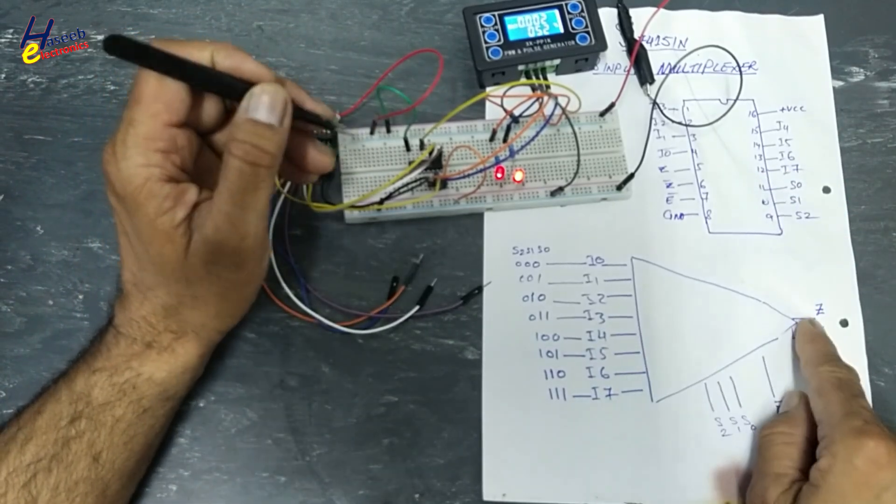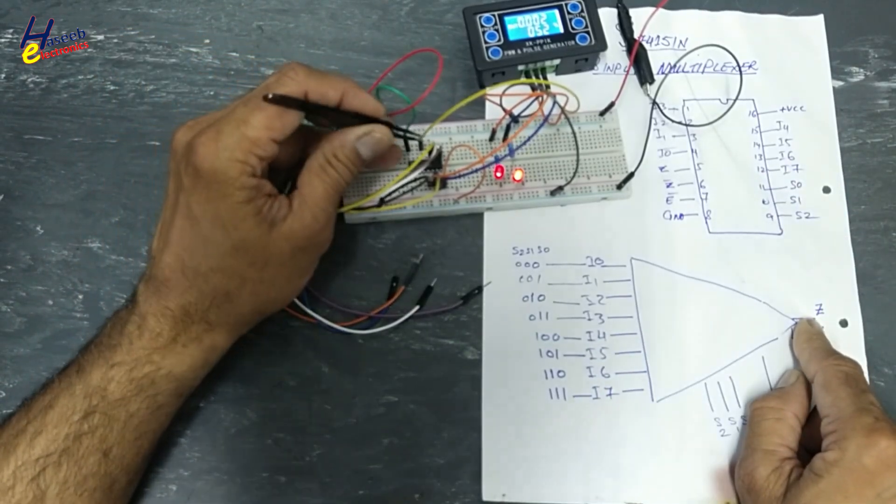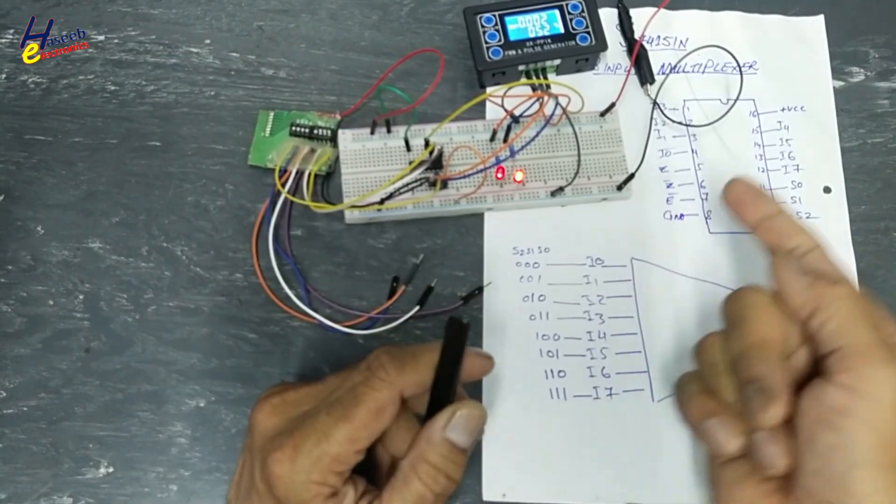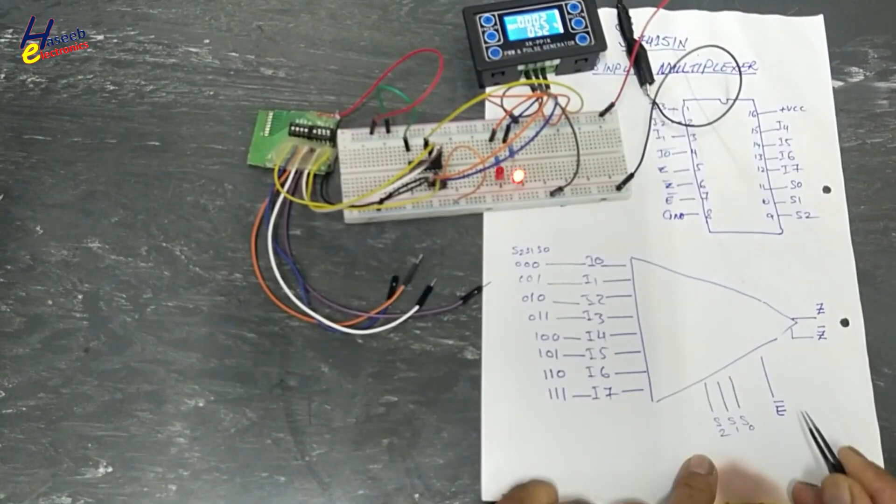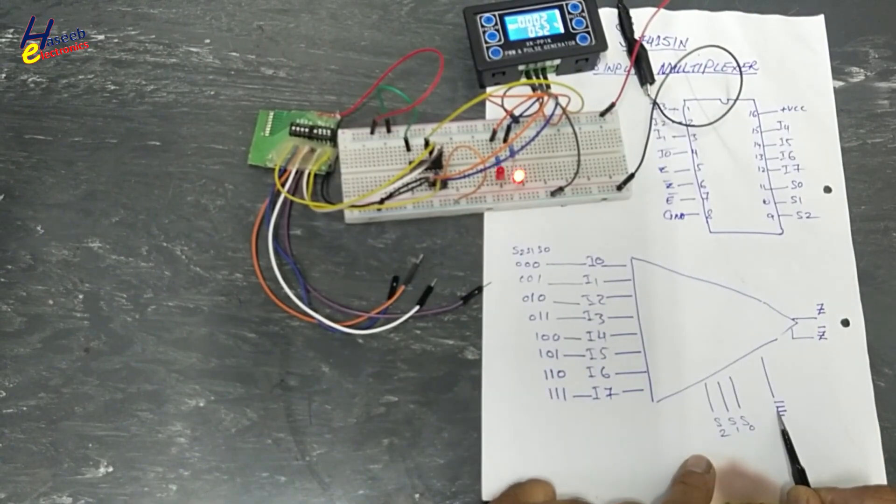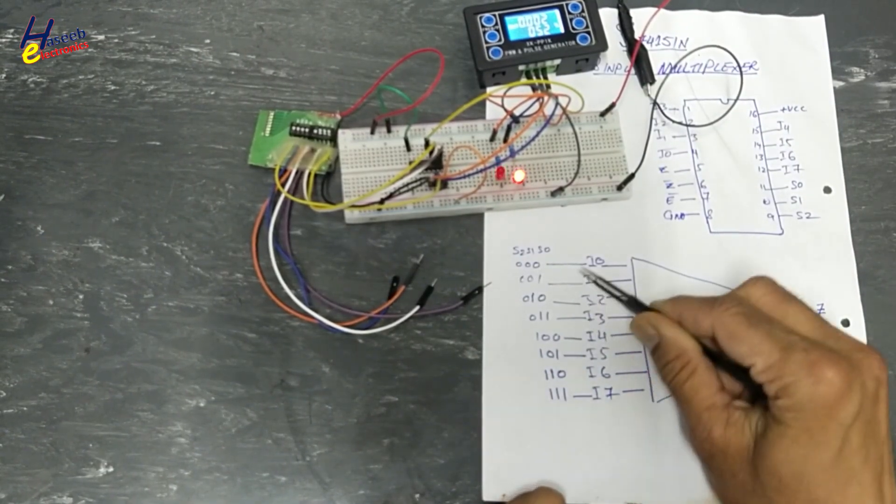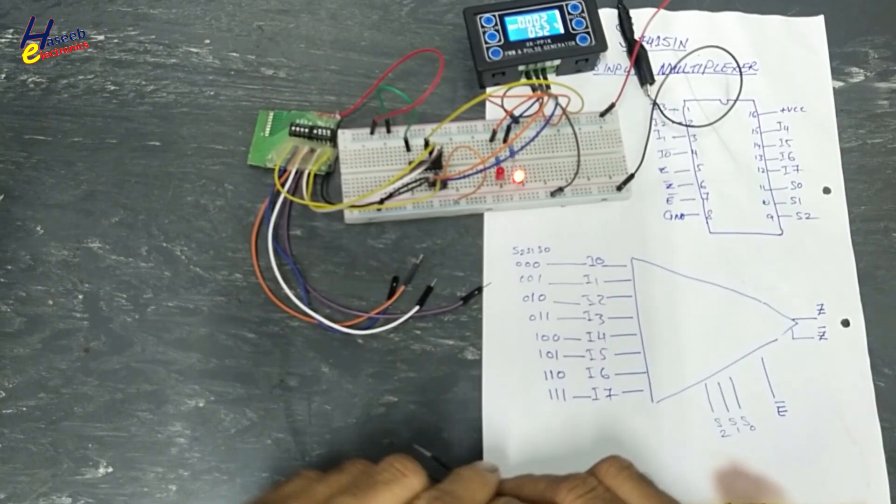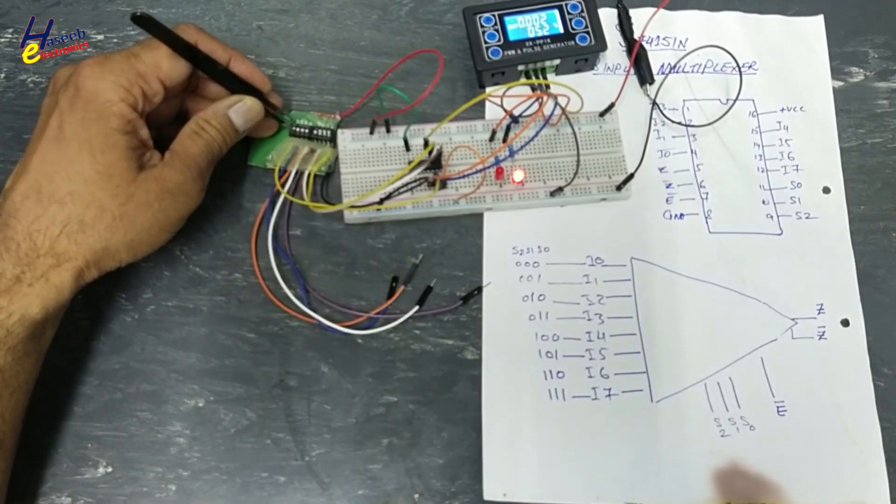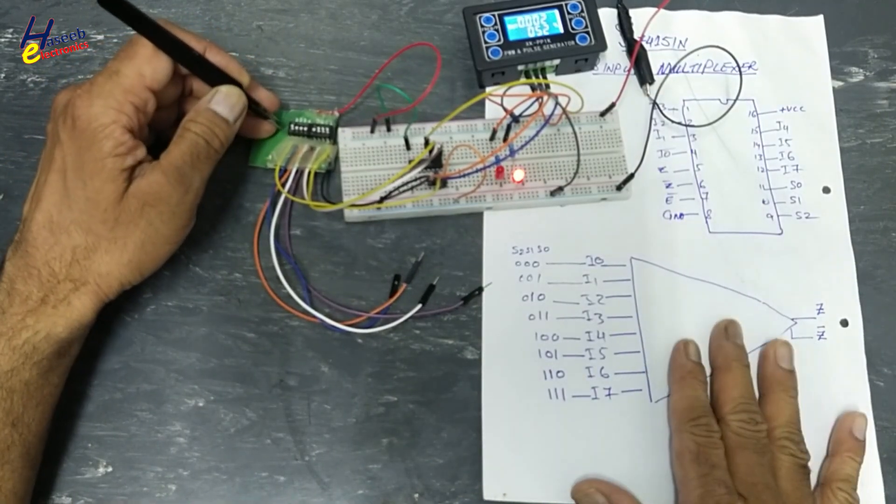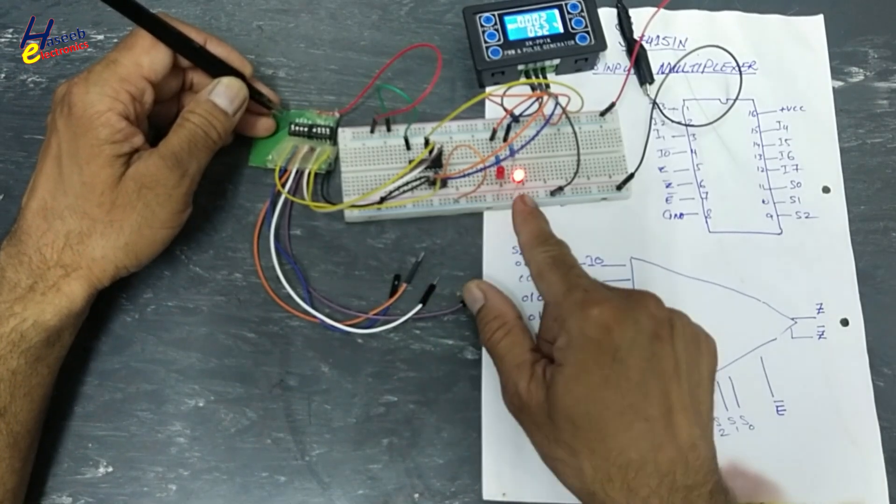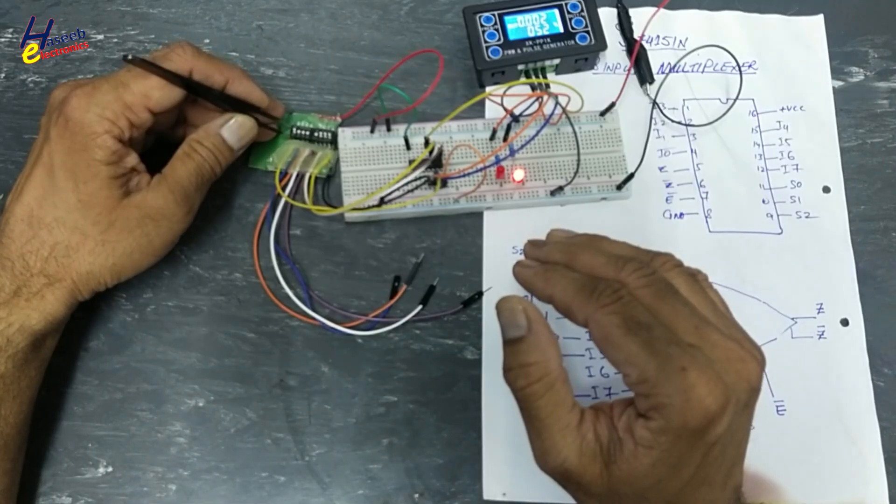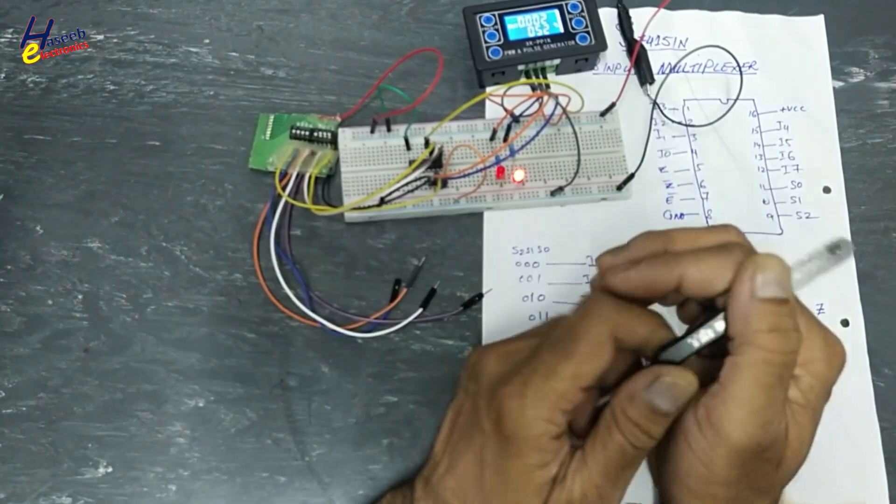Signal at pin number 12 is reaching at Z output. When enable pin is low, address is selected for specific pin. That signal will reach at output. If enable pin is high, this IC will go in disabled state. Z output will low. Z bar will higher. It is reset state. Enable pin must be low to operate this IC.